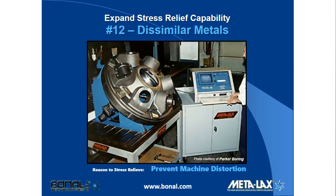The twelfth way to expand stress relief capability is treating dissimilar metals at the same time — again this goes above and beyond what the furnace is capable of doing. This example shows a low carbon steel base which is finished and painted, attached to a cast iron turret. The turret was semi-finished with the bores and faces yet to be finished. It took the customer about one hour to stress relieve this. The reason was to prevent machining distortion. The results: they had four ten-thousandths or less throughout the program — much better than they had ever seen in the past.